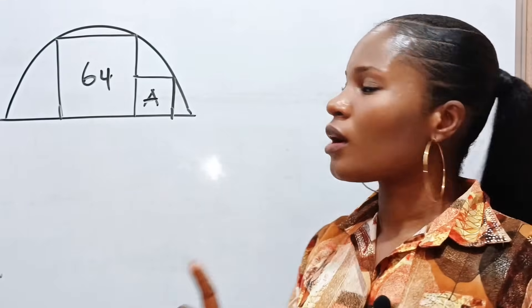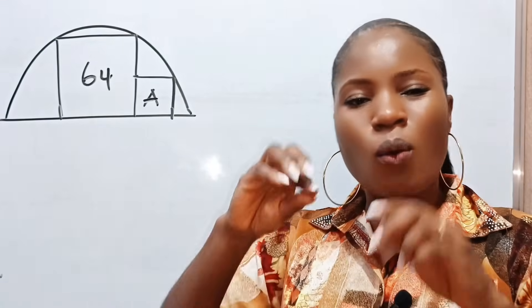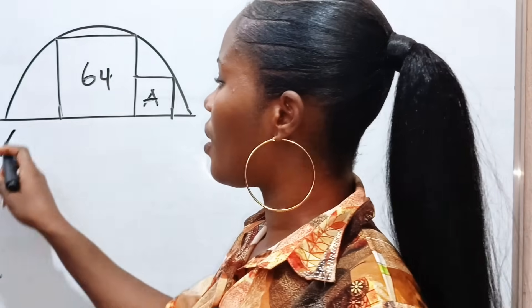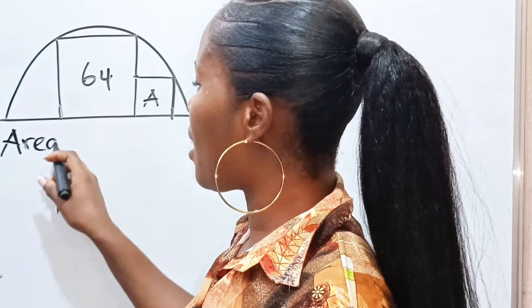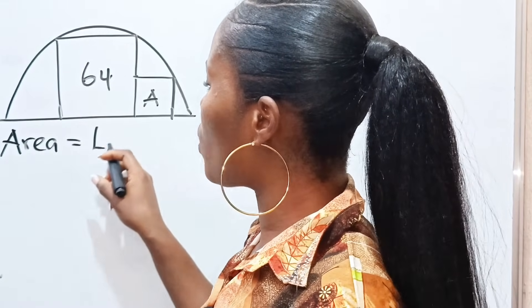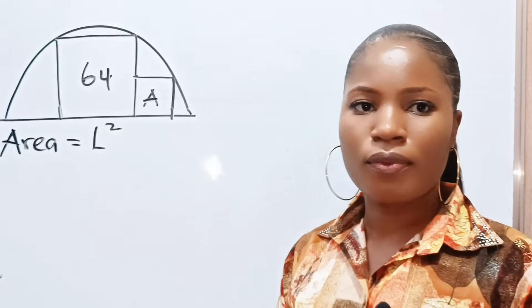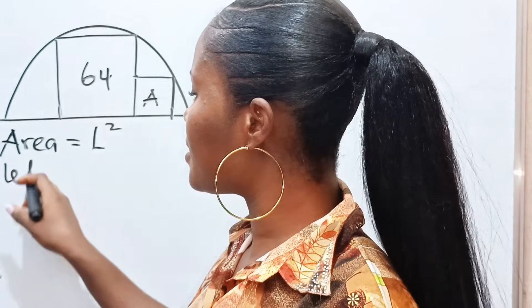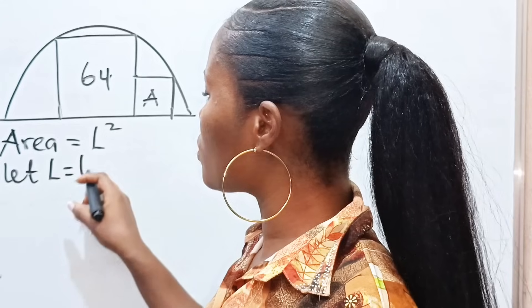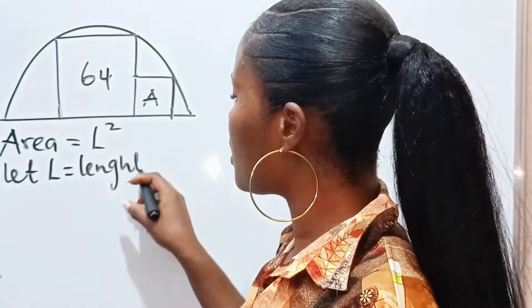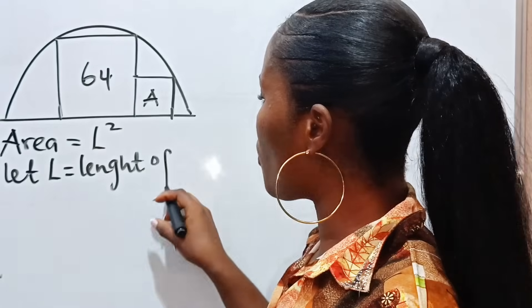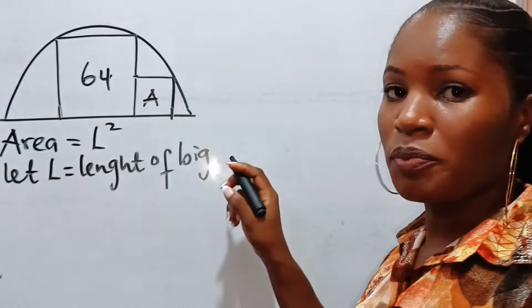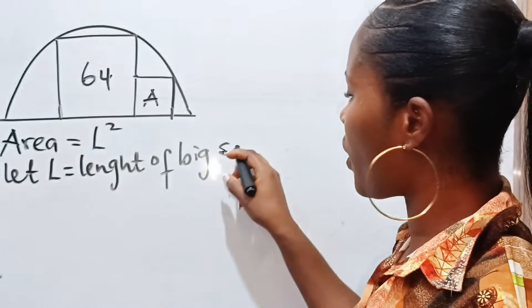That is the first clue. Since you are given the area of a square, remember that the area of a square is equal to length squared. Now let L be equal to the length of the bigger square.